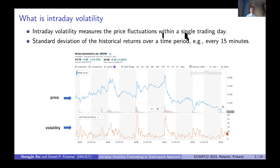Mathematically, it is defined as the standard deviation of the historical return over a time period, for example, every 15 minutes. Below, I show you a screenshot of Yahoo Finance. In the upper panel, it shows the price change, and in the lower section, it shows the volatility change. As you can see, when the price fluctuates more, then the volatility rises.